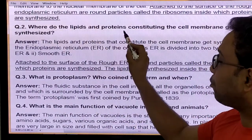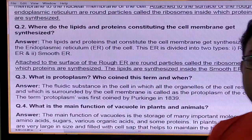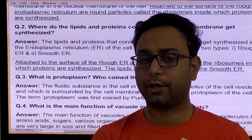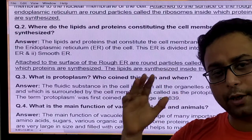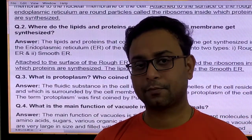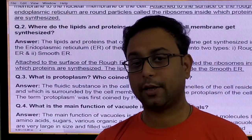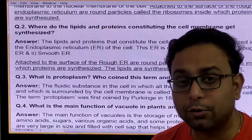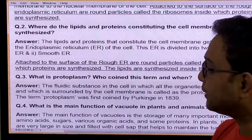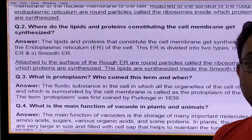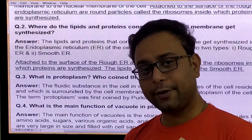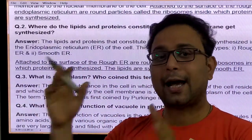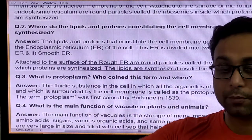Question number two: Where do the lipids and proteins consisting in the cell membrane get synthesized? The cell membrane is the most important structure. We already discussed the fluid mosaic model, given by Singer and Nicholson, in which proteins and lipids are two important substances. Both are produced inside the cell in the endoplasmic reticulum. Rough endoplasmic reticulum produces protein, and smooth endoplasmic reticulum produces lipids.